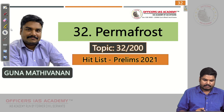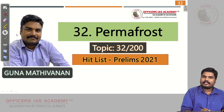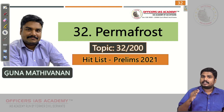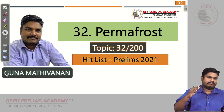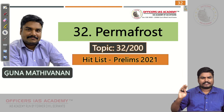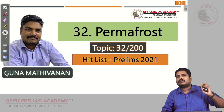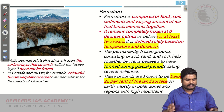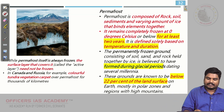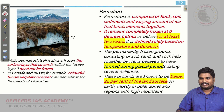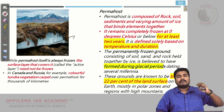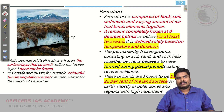So what is permafrost? These are grounds which remain frozen for more than 2 years. When a ground remains frozen for more than 2 years, we classify that area as permafrost. For example, almost 22% of our land surface in the world is in the form of permafrost — permanently frozen.